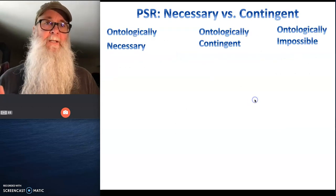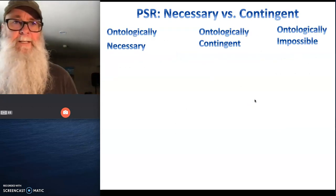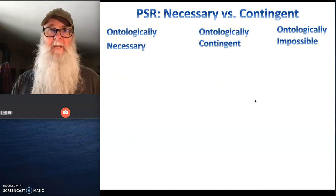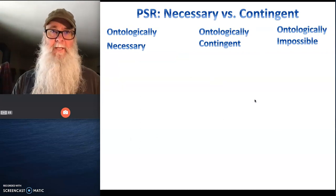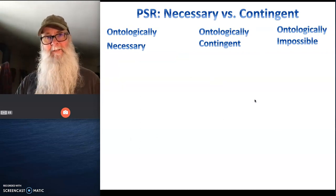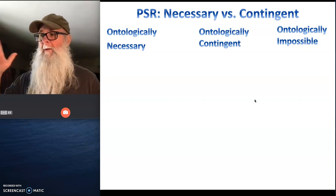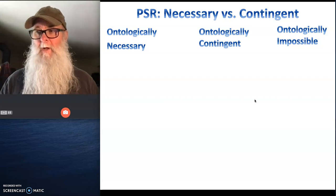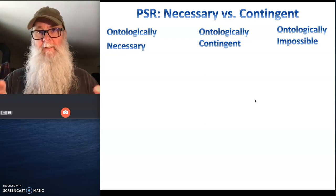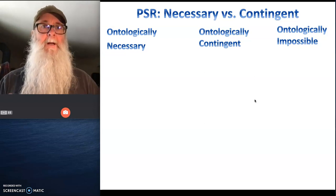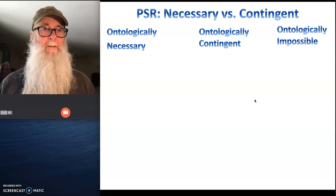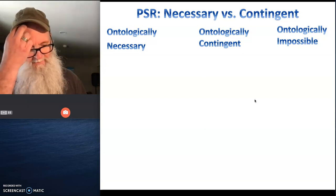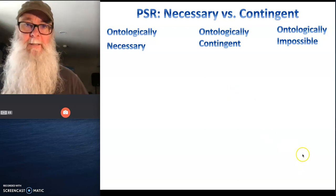Now take these qualities of necessary and contingent and apply them to stuff. We're going to take the same properties and apply them to stuff, and when we do, we're going to characterize things as either ontologically necessary, ontologically contingent, or ontologically impossible. All we mean by ontologically is stuff exists.